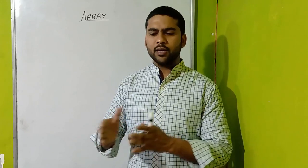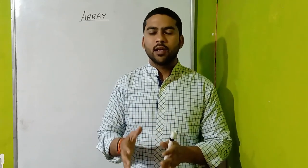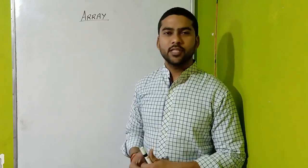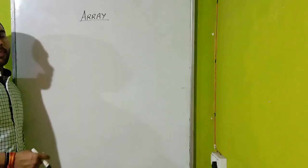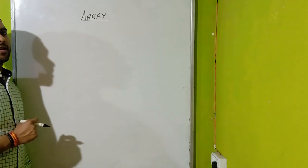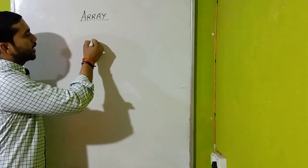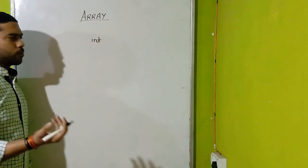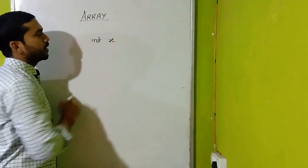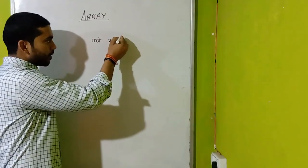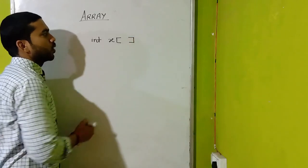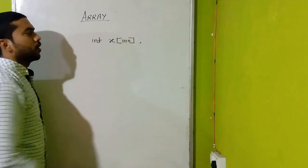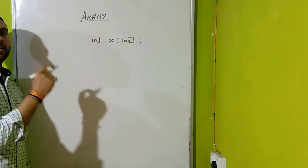Array ka use karke aap similar type ke bahut saare variables bahut aasani se bana sakte hain aur unko bahut aasani se manage kar sakte hain. Maan lijiye aapko 100 integer type ke variables banane hote, to aap data type likhenge int, ek variable ka naam likh dijiye — jaise humne x naam le liya — square bracket se isko band kariye aur andar size likh dijiye 100, terminator laga dijiye, aur bas aapke 100 variables ban gaye.